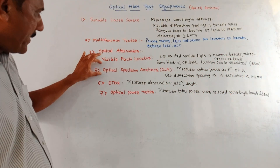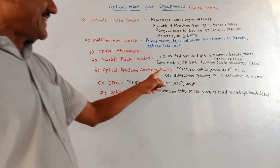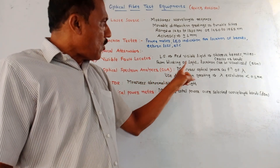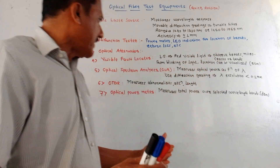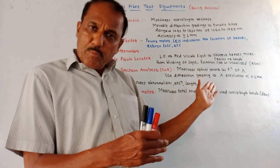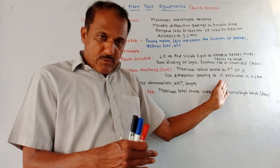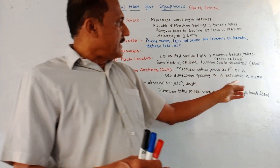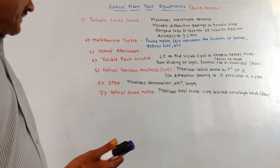Next is optical spectrum analyzer, that is OSA. It measures the optical power as a function of wavelength and makes use of a diffraction grating. The resolution of wavelength is less than 0.1 nanometers.